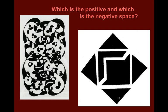Now let's do your positive and negative space assignment. Looking at these pictures — which is the positive space, and what is the negative space? On this one right here, the black is the positive space and the white is the negative space. But really it could be reversed — the black could be the negative space and the white could be the positive space.